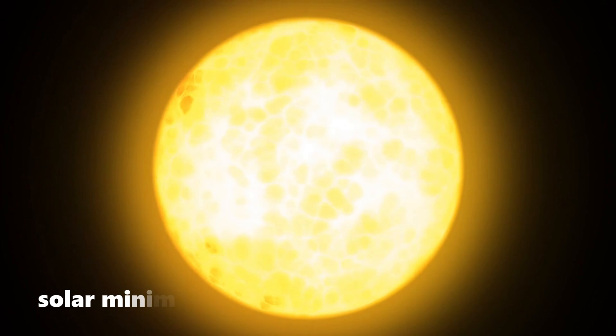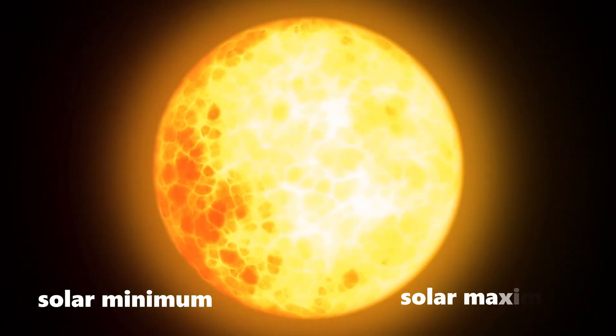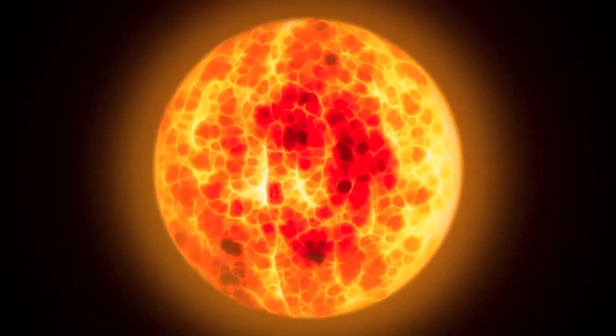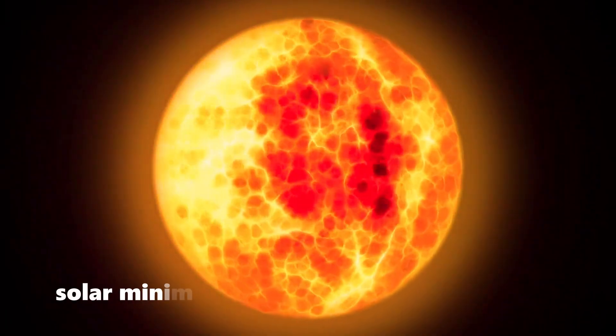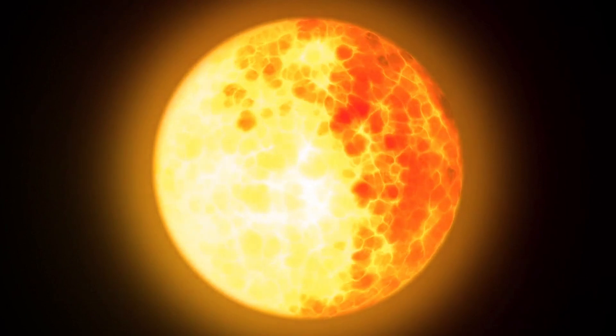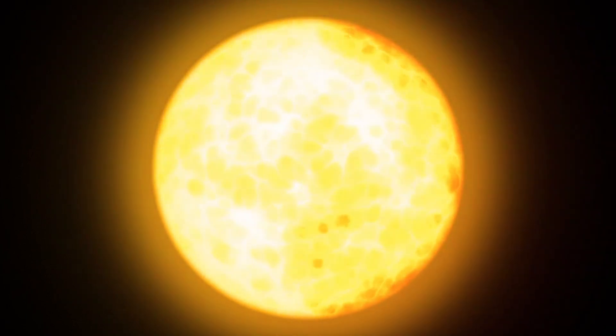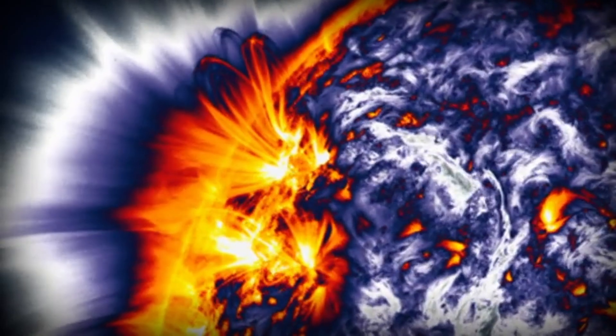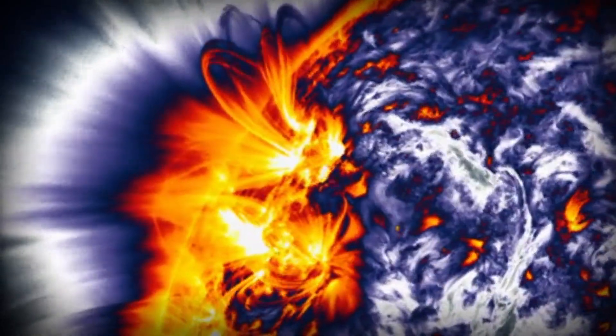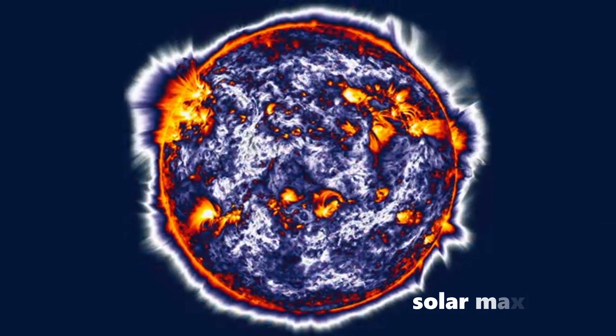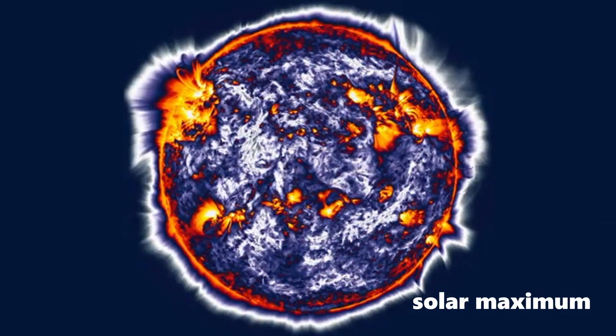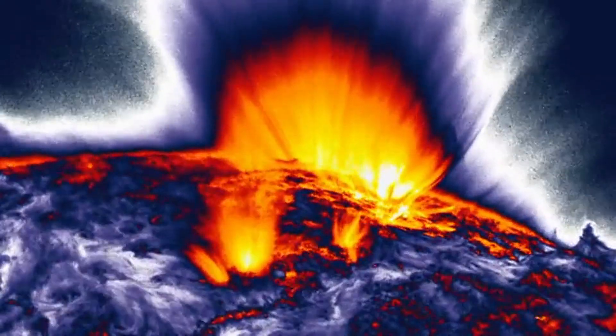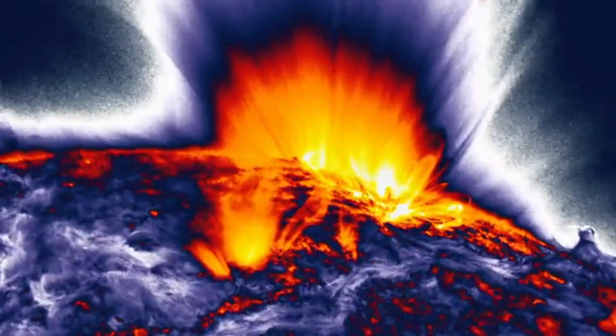One is solar minimum, and the other is solar maximum. One way to track the solar cycle is by counting the number of sunspots. The beginning of a solar cycle is the solar minimum, or when the sun has the least sunspots. Over time, solar activity and the number of sunspots increase. The middle of the solar cycle is the solar maximum, or when the sun has the most sunspots. As the cycle ends, it fades back to the solar minimum, and then a new cycle begins.